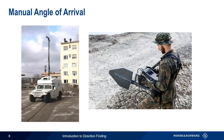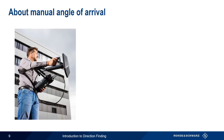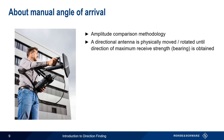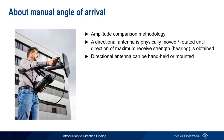We can divide direction finding methodologies into manual and automatic methods. Let's start with angle of arrival direction finding based on manual techniques. All direction finding methodologies use a change in amplitude, frequency, or phase to determine the direction towards a signal. Manual determination of angle of arrival is based on amplitude comparison — a directional antenna is physically moved or rotated until the maximum received signal strength is obtained, usually via visual inspection by the system operator. The directional antenna can be either handheld or mounted on a tripod or vehicle. The type of directional antenna will vary based on the application, such as Yagi, log periodic, or horn antennas. The angle or bearing is normally determined and recorded using a manual or electronic compass.